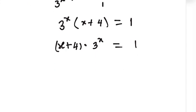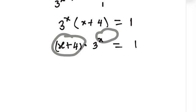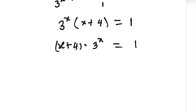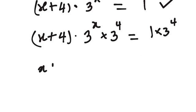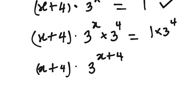So from here, this x plus 4, I want it here also — I want to turn the power of 3 to x plus 4. So I'm going to multiply this equation by 3 to the power of 4. We're going to have x plus 4, multiplied by 3 to the power of x, multiplied by 3 to the power of 4, equals 1 times 3 to the power of 4. From the laws of indices, that gives us x plus 4 multiplied by 3 to the power of x plus 4, equals 3 to the power of 4.